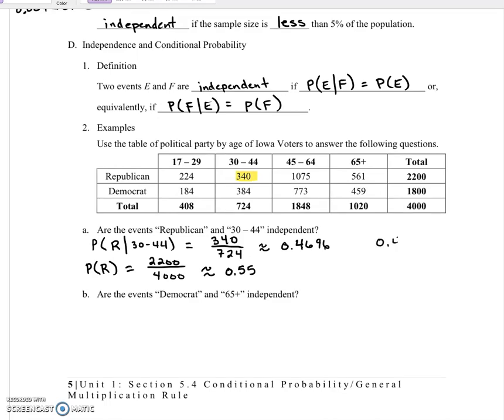So 0.4696 does not equal 0.55. So Republican and being a 30 to 44 year old are dependent.